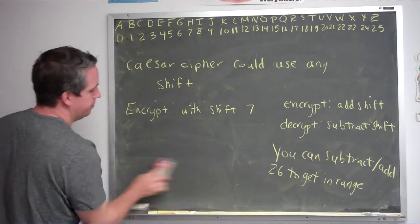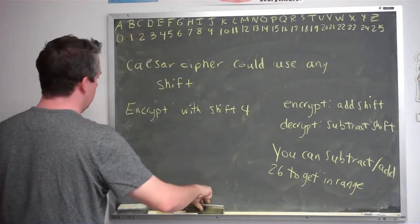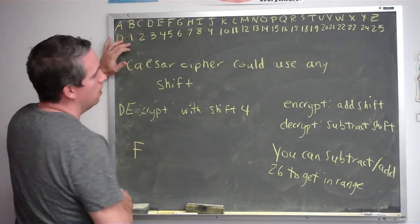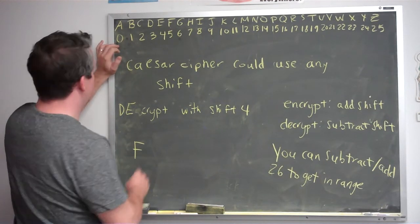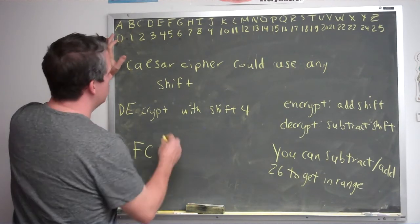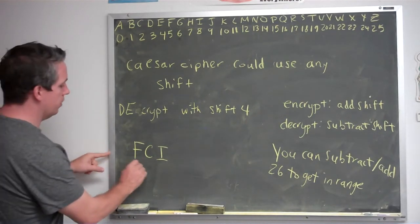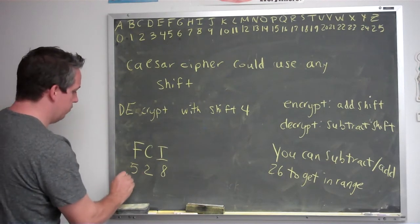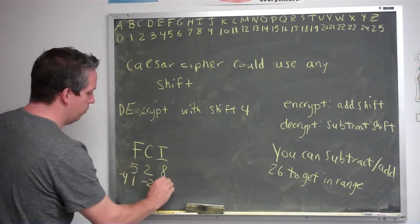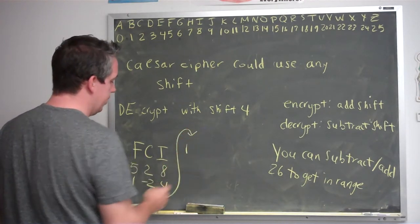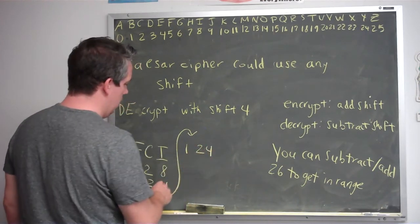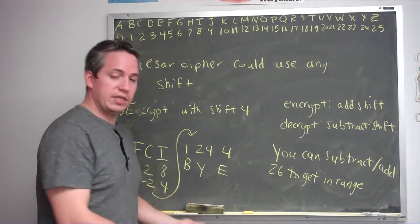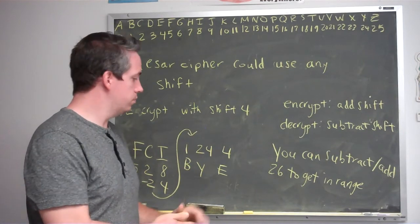Let's do one more — decrypt F, C, I with a shift of four. F is five, C is two, I is eight. We're decrypting, so we subtract four: five minus four is one, two minus four is negative two, eight minus four is four. One is fine, but negative two is out of range. Negative two plus twenty-six is twenty-four. So we have one, twenty-four, and four — which gives B, Y, E. That's the Caesar cipher. We'll be talking about the decimation cipher and the linear cipher in future videos.